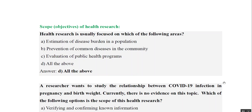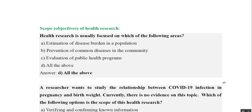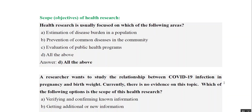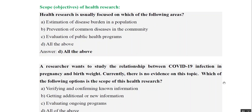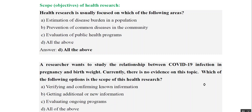Now let us look at some MCQs from these topics. First: health research is usually focused on which of the following areas — estimating disease burden in a population, prevention of common disease in the community, and evaluation of public health programs? All of the above is the answer. Second question: a researcher wants to study the relationship between COVID-19 infection in pregnancy and birth weight, and currently there is no evidence on this topic. Which scope does this fall under? Since there is no existing information, we are not verifying known information, and there is no ongoing program being evaluated — so the answer is B: we are getting new information about COVID-19.